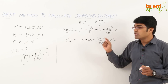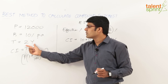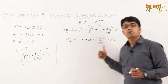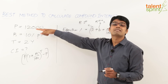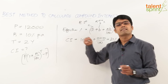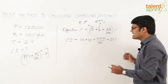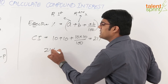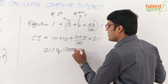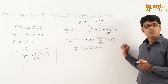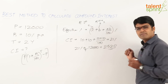So the total compound interest for 10% per annum over 2 years is 21%. Interest calculations are always based on the principal amount, so the final answer is 21% of 12,000 rupees, which is 2,520 rupees.